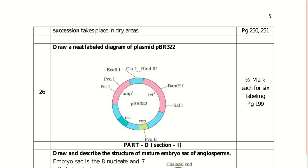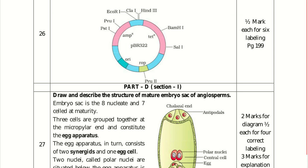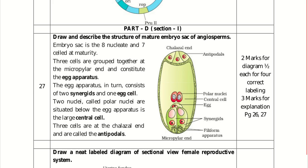Part D has two sections with five-mark questions. Question 27: draw and describe the structure of a mature embryo sac of an angiosperm. The mature embryo sac has eight nuclei and seven cells at maturity. At the micropylar end is the egg apparatus — two synergids and a centrally located egg cell. The large central cell has two polar nuclei. Three antipodal cells are present at the chalazal end. Two marks for the diagram, half mark for four correct labellings, and three marks for explanation.